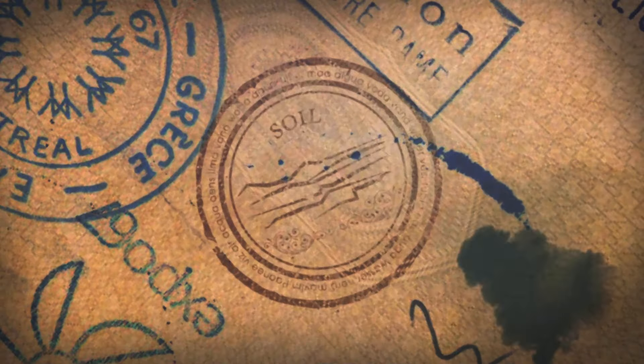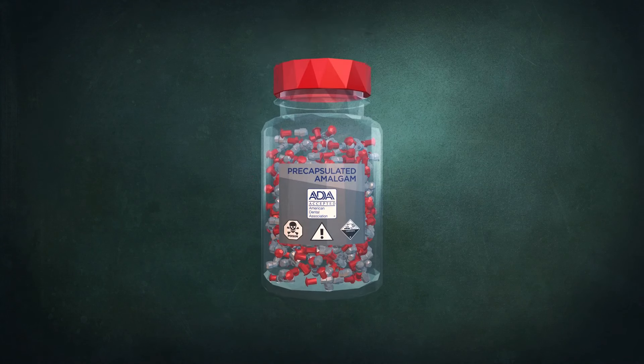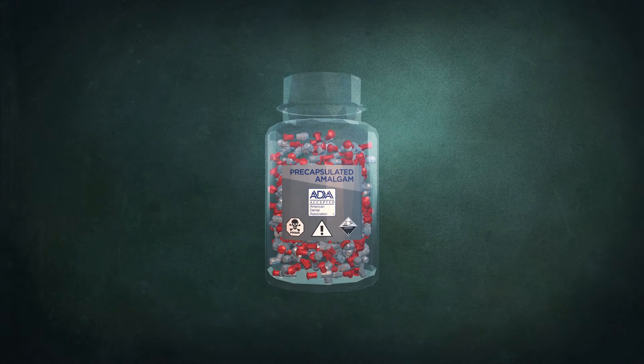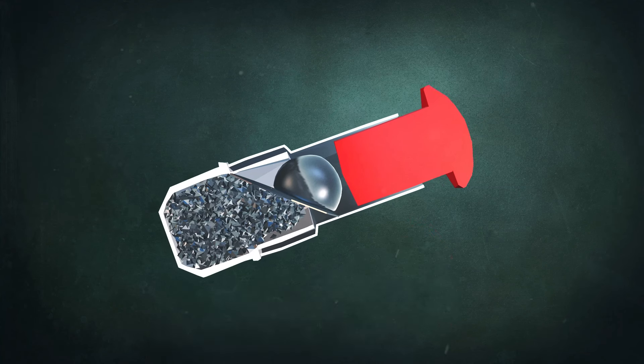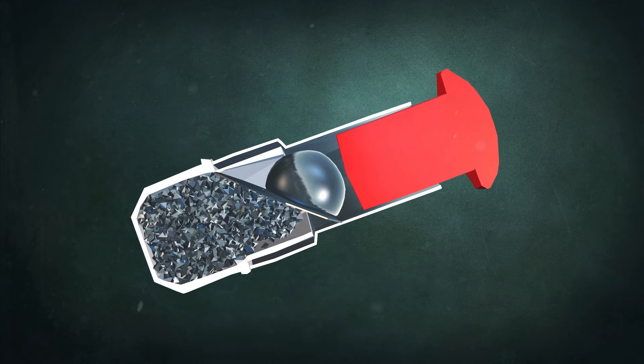Dental mercury travels many pathways on its journey back into the environment. It starts when a dentist receives pre-capsulated dental amalgam. In each capsule, up to 900 milligrams of elemental mercury is separated from the other alloys.